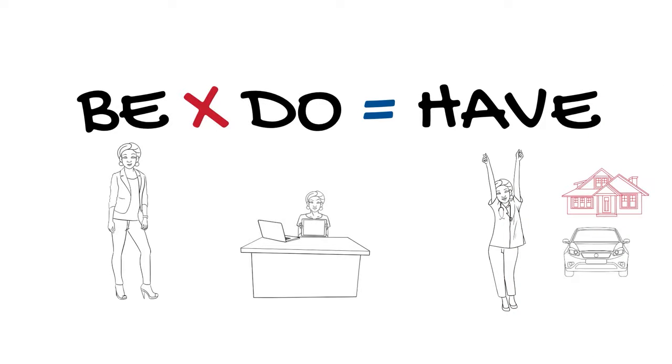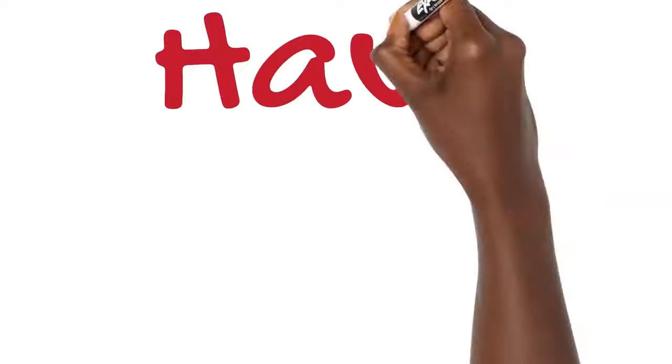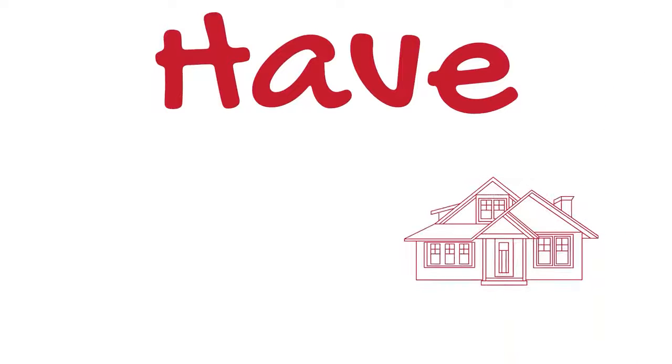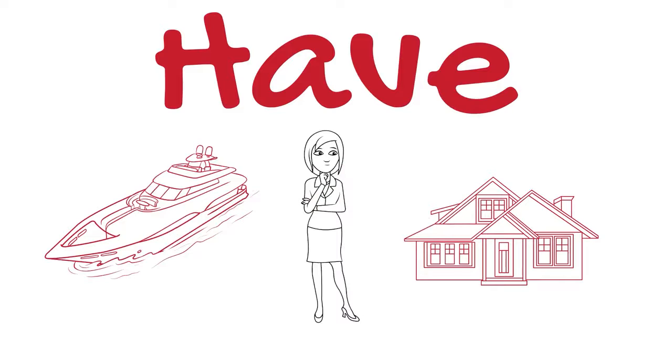But hey, let's work this backwards just for a second. Have also equals do times be. So if I know what I want to have, I know what my dreams are, I know what my goals are, then I can work backwards and say,